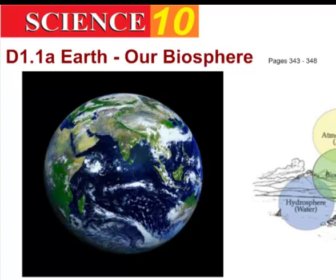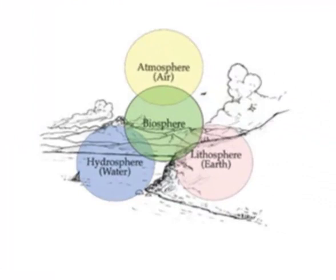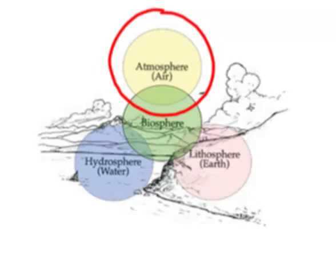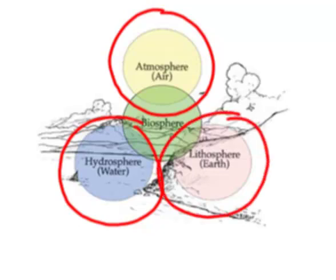Our biosphere, which is the area that we live in, because bios means life, consists of three overlapping spheres. We have the atmosphere, which is the air of the planet. We have the hydrosphere, which is the water that's available on planet Earth. And then we have the lithosphere, which is the rock or the solid crust of the Earth.